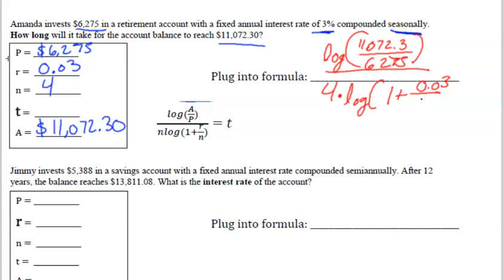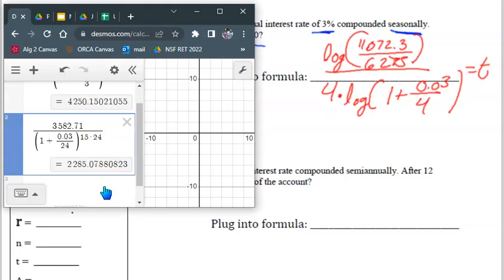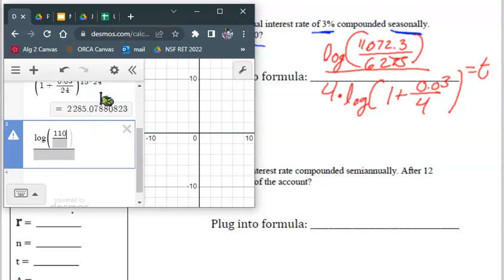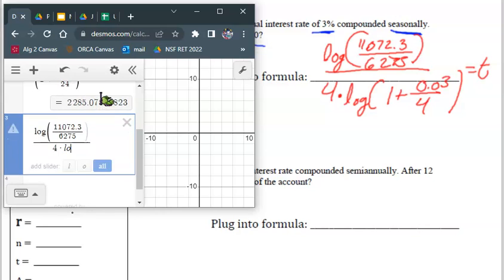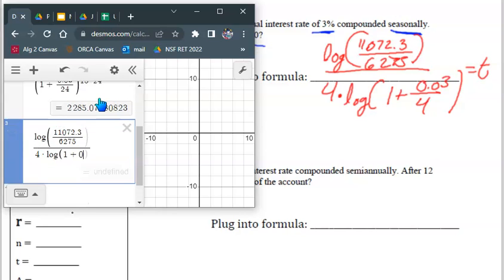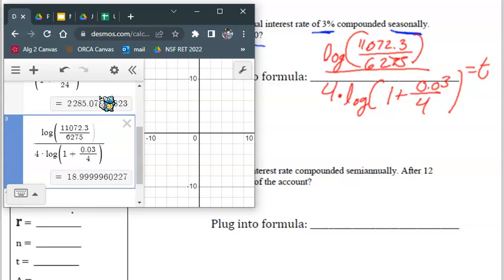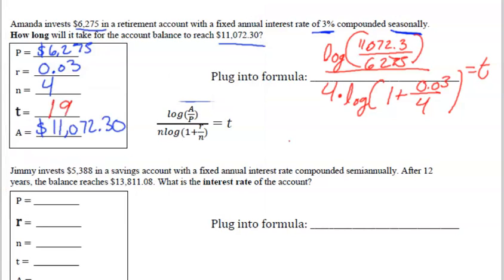We'll plug this into the calculator to get our answer. It looks like we have 18.999 so that would be rounding to 19, so about 19 years.